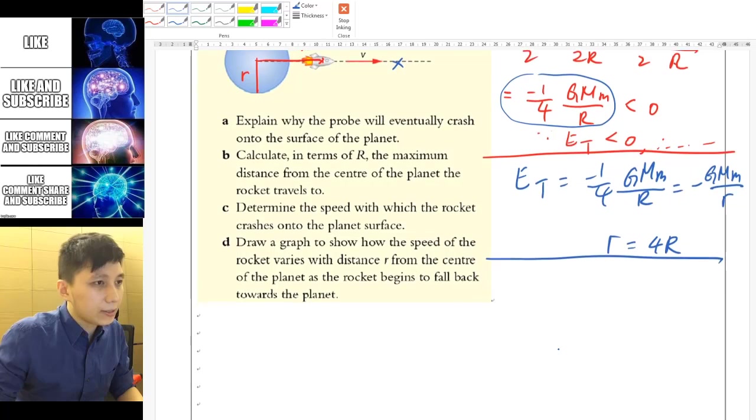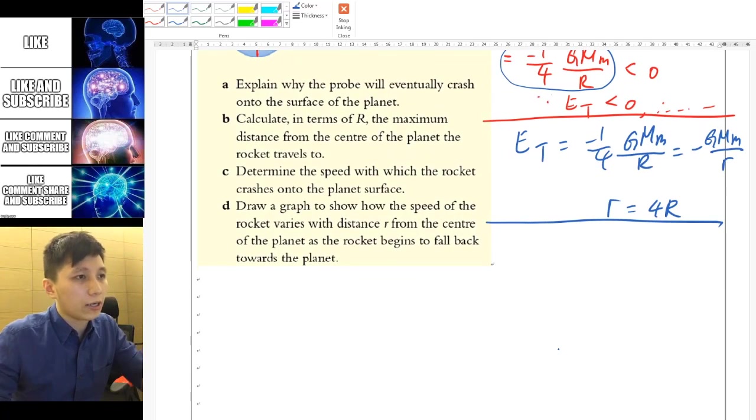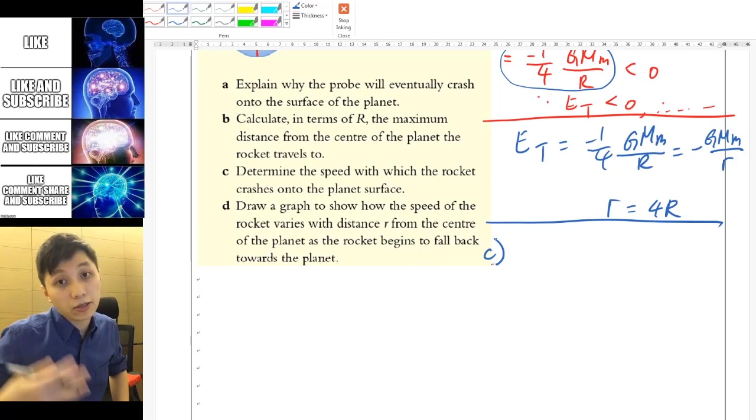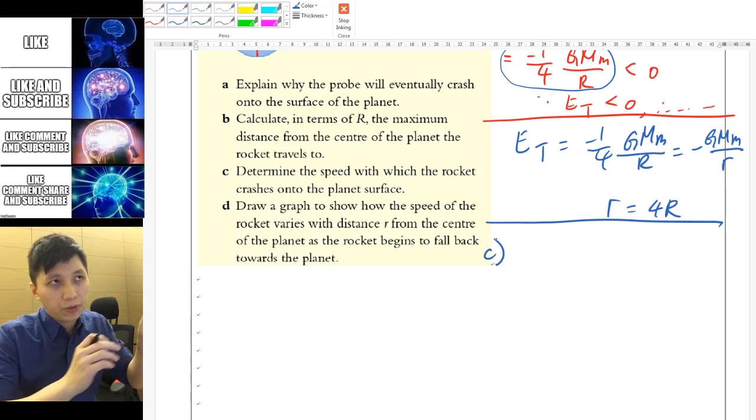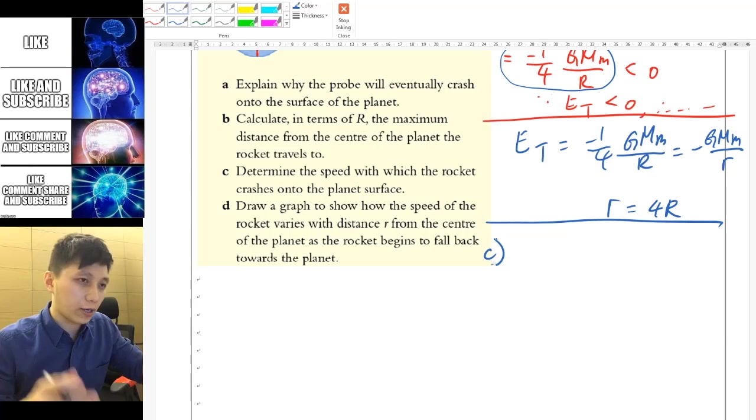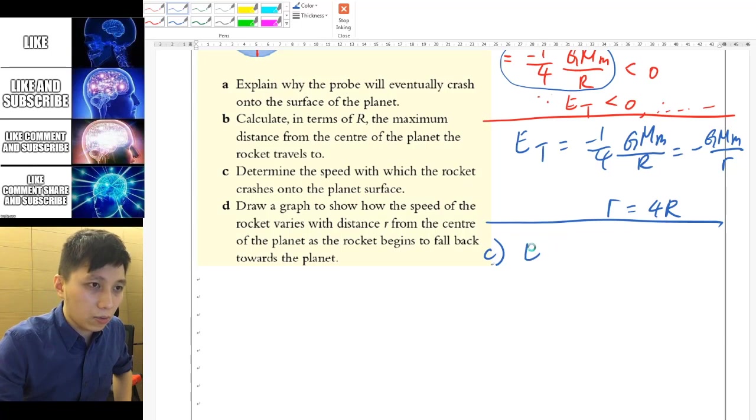Now part C, it asks you the speed when the rocket crashed onto the surface, what speed it will have. So once again, you'll be using the total energy. So now I hope you can find total energy is quite useful because you can always call that. And then you try to pick any point you like and try to work out the potential energy and kinetic energy. So I'll just call it. So I'll write this again.